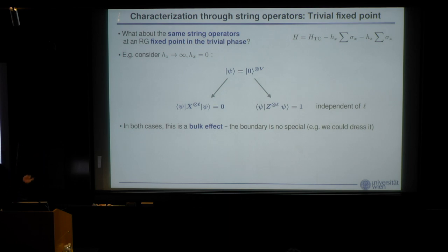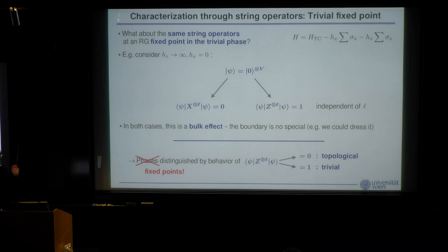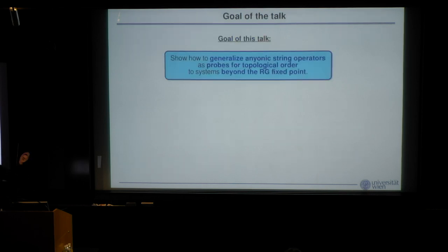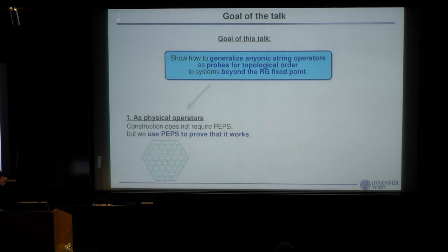To isolate the pure boundary effect — or verify its absence — we should divide out the bulk contribution. We take the expectation value of a finite string of length L and divide by the expectation value of the closed string going around the torus, normalized per unit length. This cancels the bulk decay, leaving only the boundary contribution. In the trivial phase, this ratio equals one, indicating no boundary obstruction — the bulk determines everything.